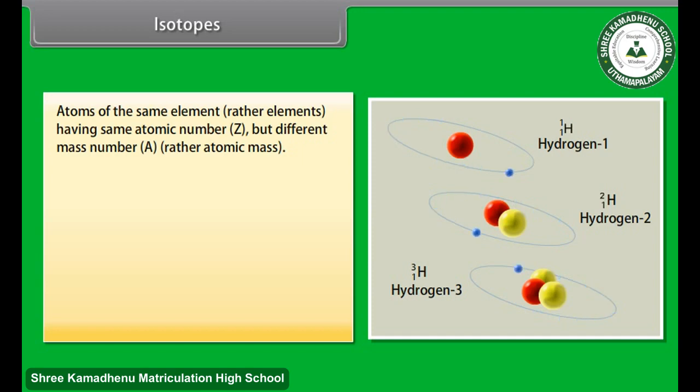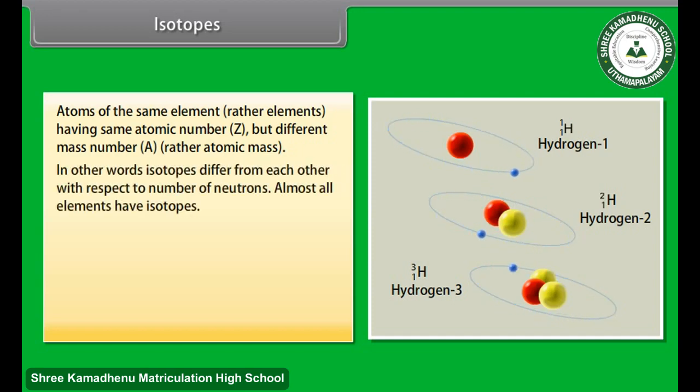In other words, isotopes differ from each other with respect to number of neutrons. Almost all elements have isotopes. Isotopes of hydrogen.